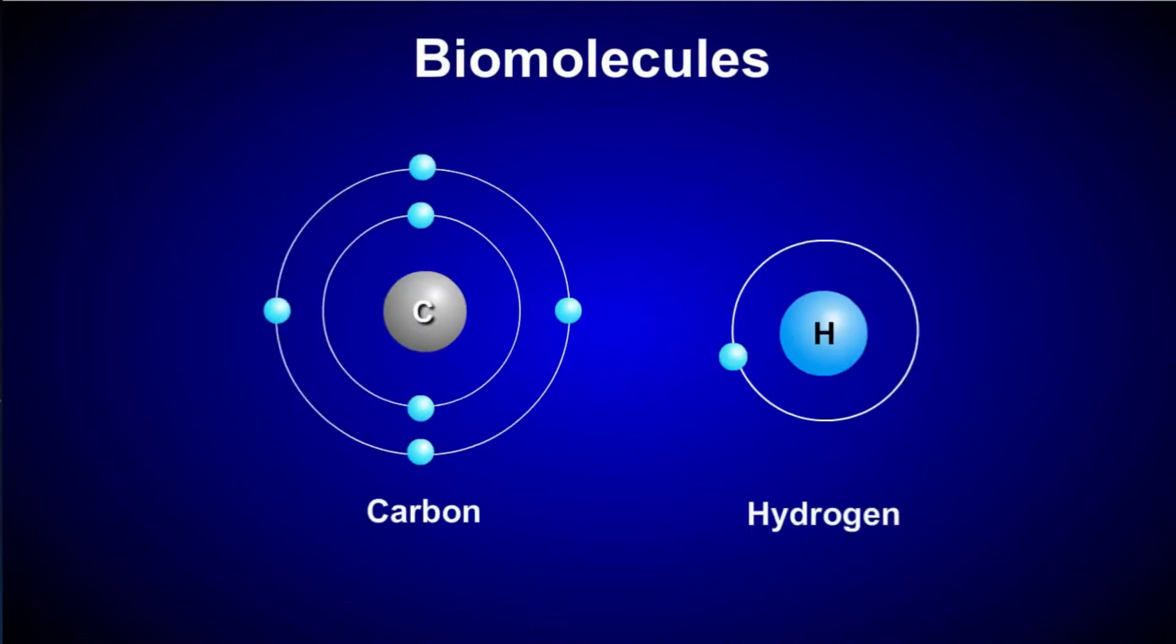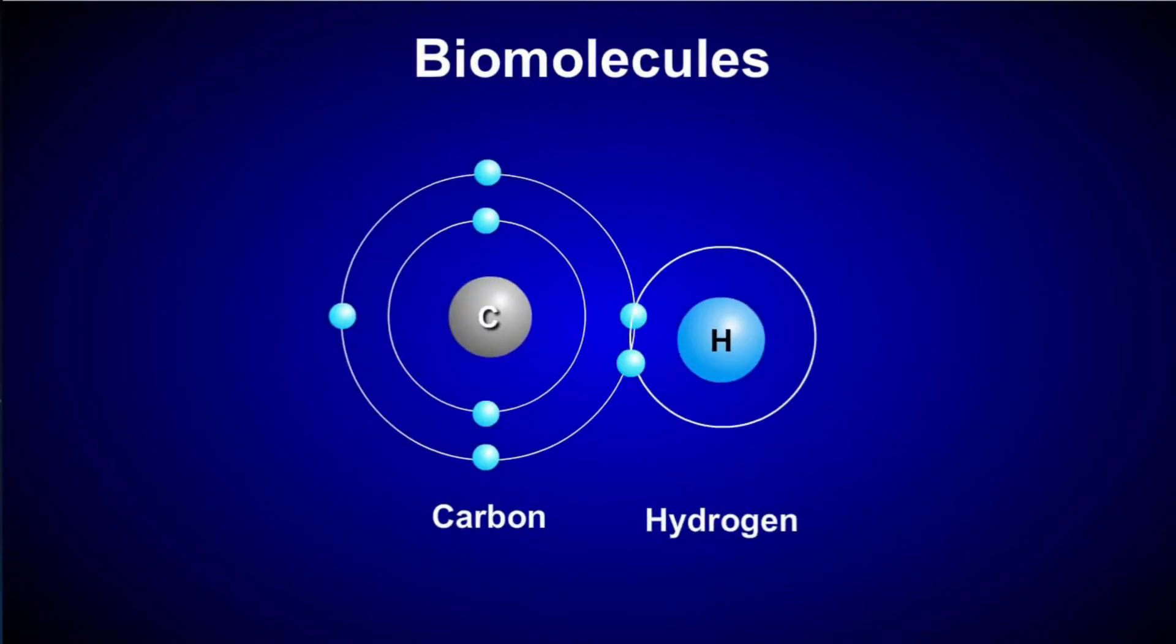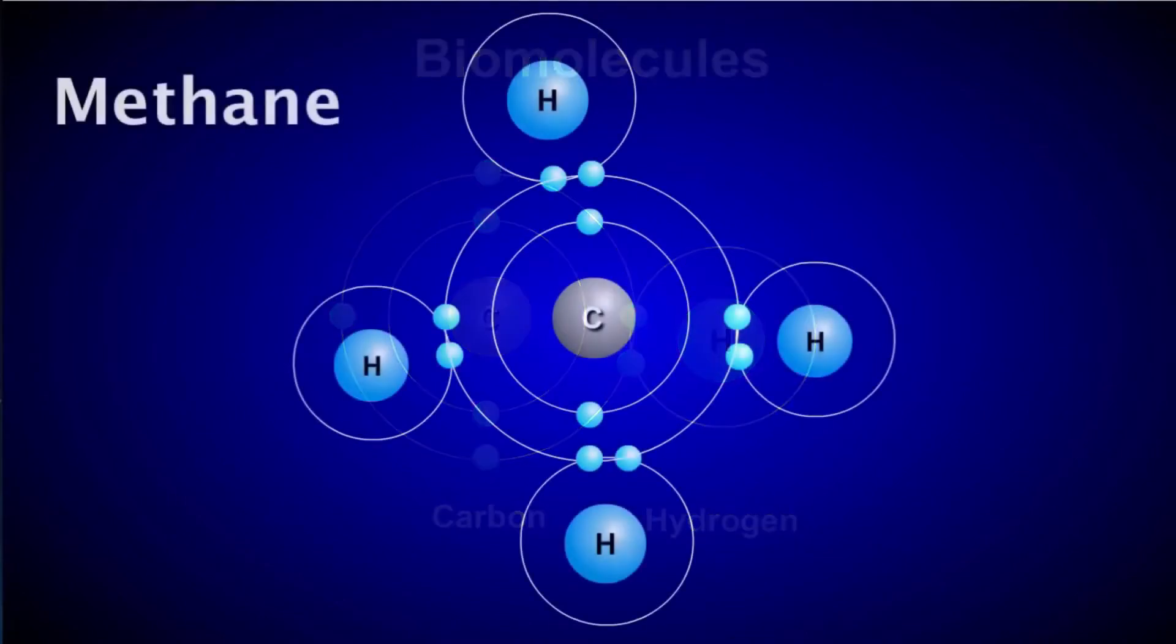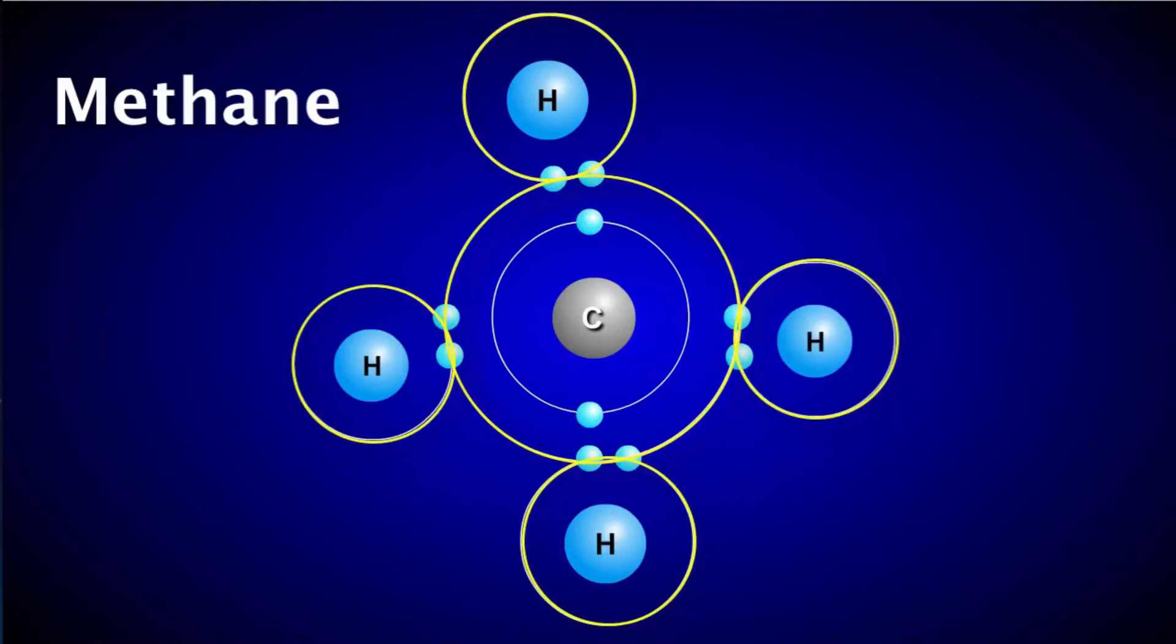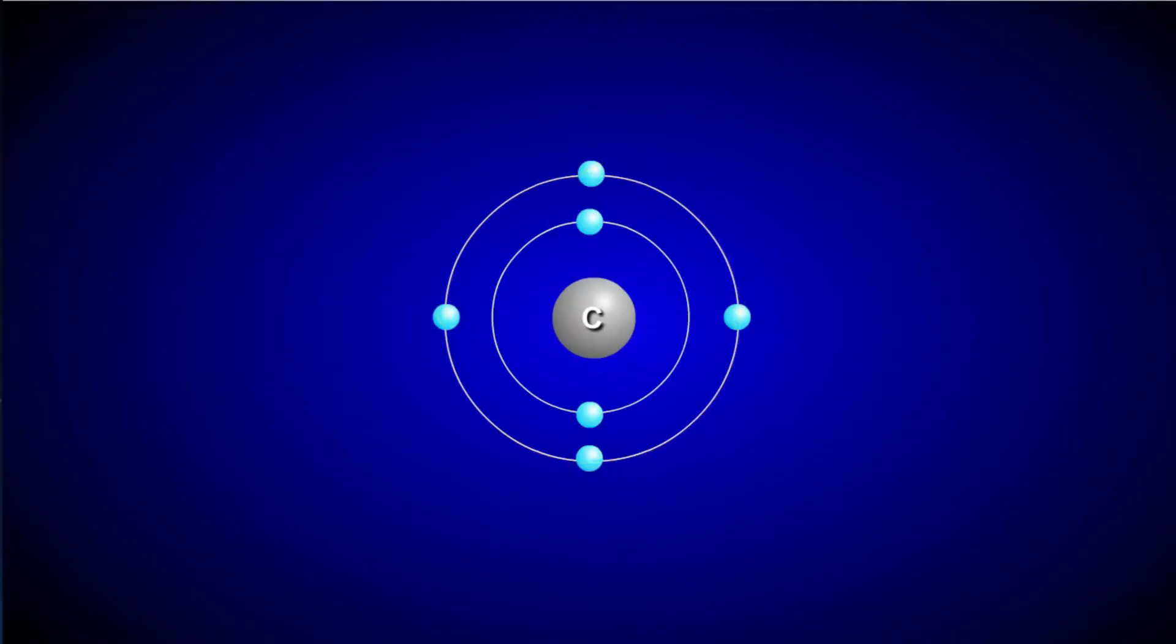Methane is one of the simplest organic molecules. Notice that the central carbon atom, by sharing electrons, has formed chemical bonds with four hydrogen atoms. Carbon is important for life because it's a very versatile atom.